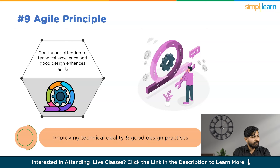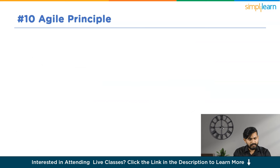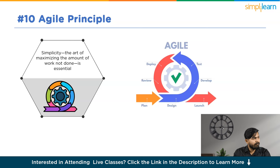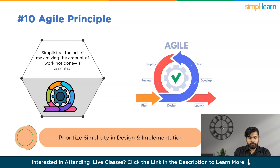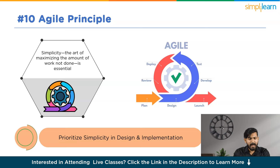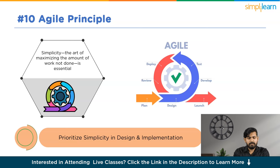Now let us move to our tenth Agile Principle: simplicity — the art of maximizing the amount of work not done — is essential. The 80-20 rule, the idea that 80% of results come from 20% of efforts, aligns with this Agile principle. It emphasizes focusing on impactful activities. In product management context, this translates to a laser-sharp focus on organizational objectives and making strategic, purposeful prioritization decisions. Agile principles discourage aimless development and stress the significance of being strategic and purposeful in building products.